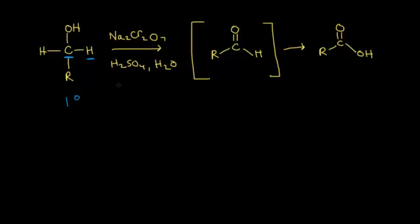If we react our primary alcohol with sodium dichromate, sulfuric acid, and water, which we call the Jones reagent, we're going to oxidize our alpha carbon and lose one of those protons attached to the alpha carbon, which will give us an aldehyde functional group. We increased the number of bonds of carbon to oxygen and lost a bond of carbon to hydrogen.